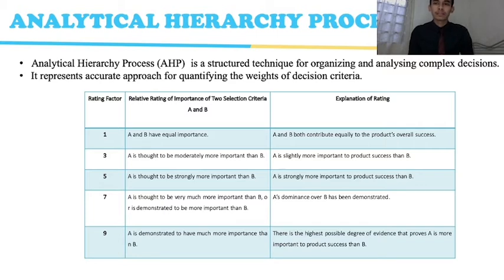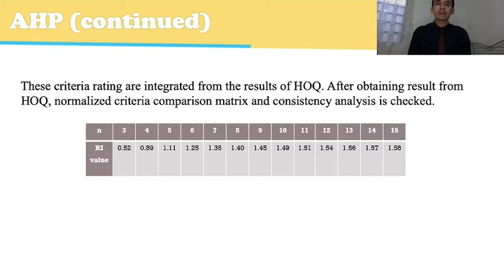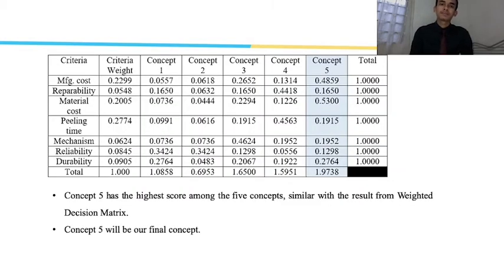The analytical hierarchy process (AHP) is a structured technique for organizing and analyzing complex decisions. It represents an accurate approach for quantifying the weight of decision criteria. The AHP includes rating factor, relative rating of importance of two selection criteria A and B, and expansion of rating. These criteria ratings are integrated from the results of the house of quality. After obtaining results from HOQ, we normalize the criteria comparison matrix and perform consistency analysis. Concept five has the highest net score of 1.9738 among the five concepts, consistent with the weighted decision matrix result. Therefore, concept five is chosen as our final concept.